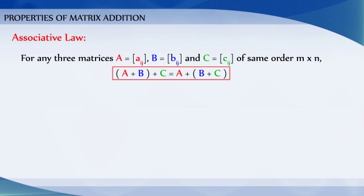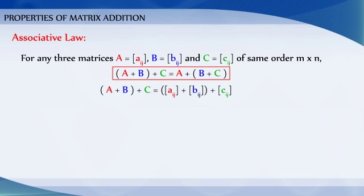Associative law: For any three matrices A equal to Aij, B equal to Bij, C equal to Cij of the same order M by N, A plus B plus C is equal to A plus B plus C. That is, A plus B plus C is equal to matrix Aij plus matrix Bij plus matrix Cij.